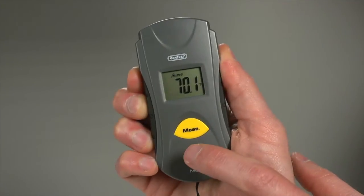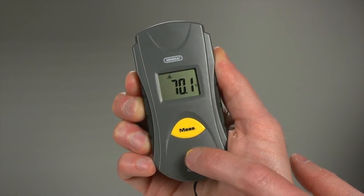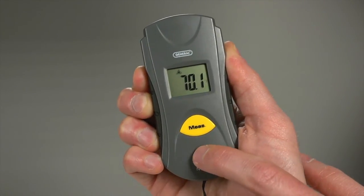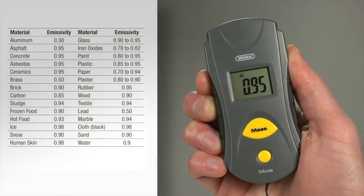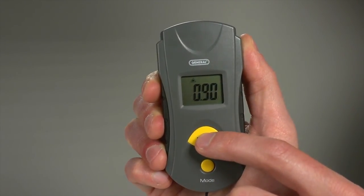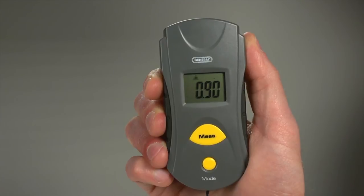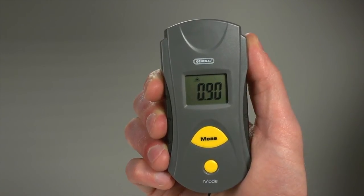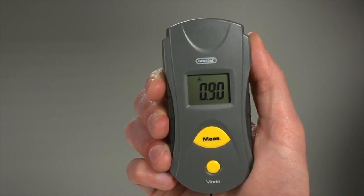Press five times for emissivity mode. Objects reflect or absorb IR radiation. This mode lets you adjust for it. The user's manual has a handy table. Water has emissivity of 0.9. In this mode, press measure to get 0.9 emissivity. Now press mode to return to measuring and proceed.